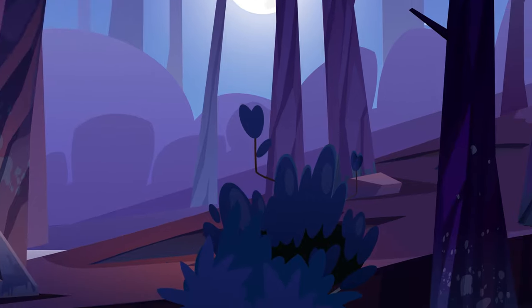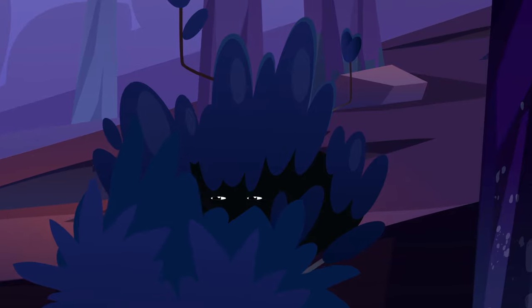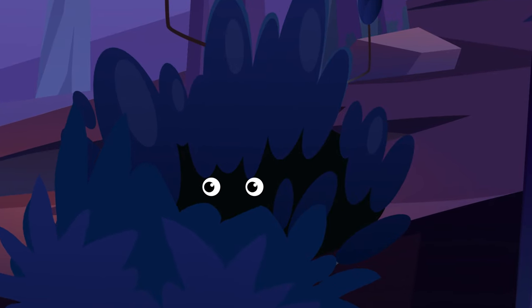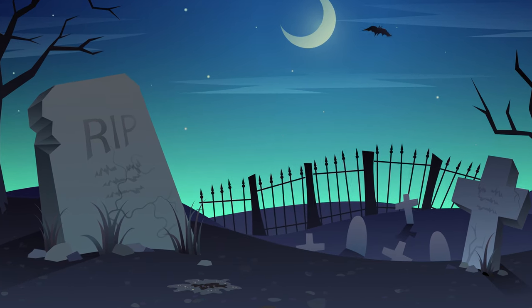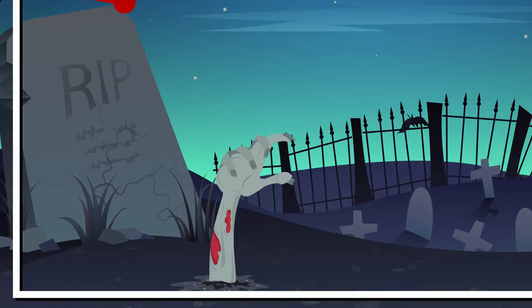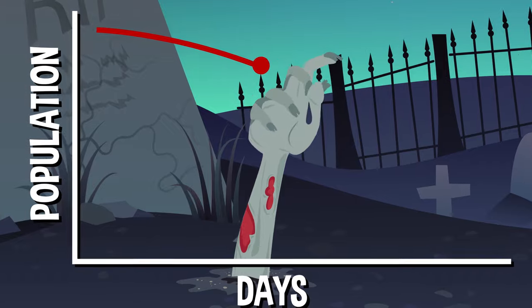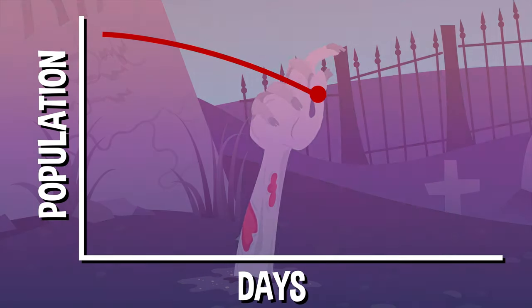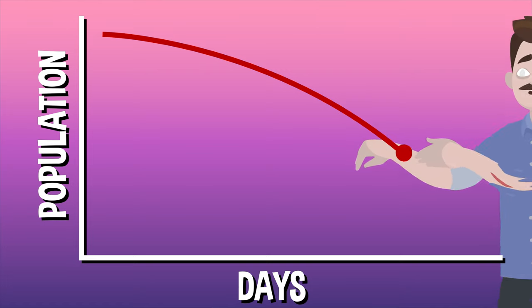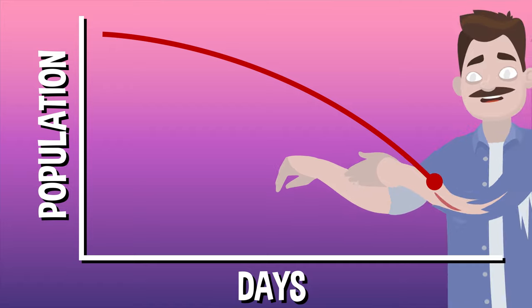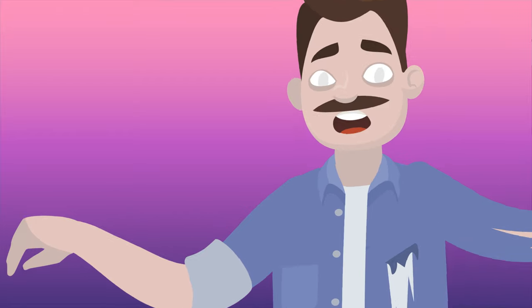But if somehow, in some fantasy future, there actually was an outbreak of the undead, well, what would happen? One study determined that hordes of zombies would whittle down Earth's population to just a few hundred survivors in only 100 days. It would take the first 20 days for a single zombie to start a small epidemic. From there, things would snowball fast. More and more people would get bitten every day, making more and more zombies, which would make it harder for humans to find anywhere safe to hide, leaving almost no one alive.